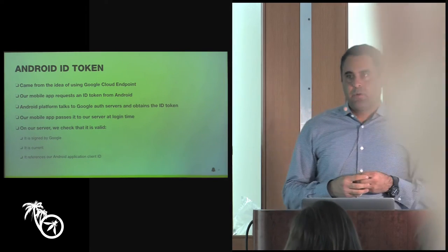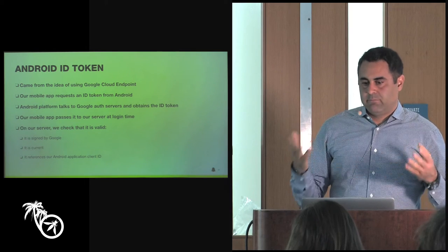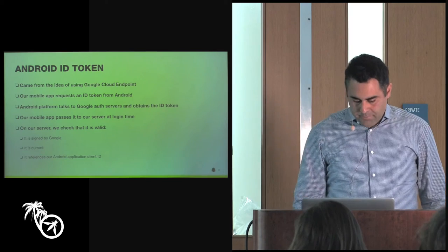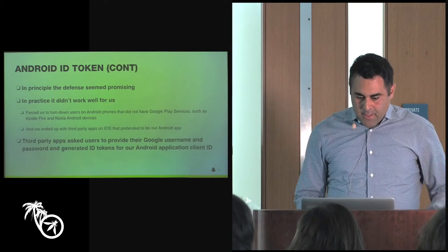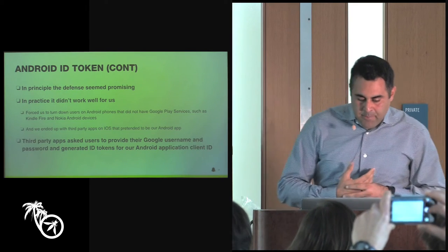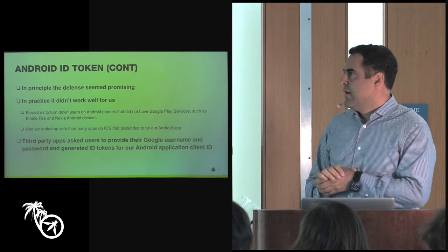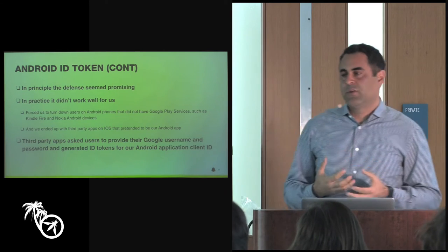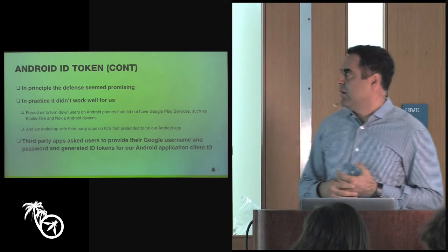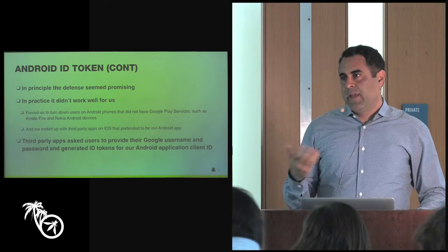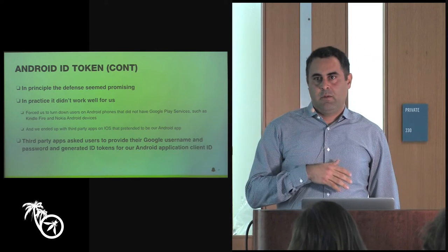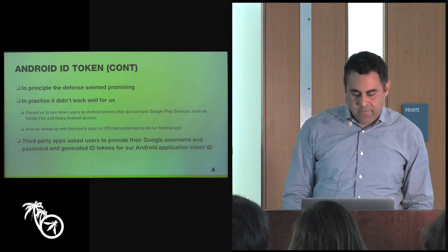The ID token is associated with Google accounts, so if you have multiple Google accounts on your phone, we could use the first one or try all of them to get legitimate tokens. In principle this seemed very interesting, but in practice it didn't quite work. The first problem was that you need Google Play Services installed — many Android phones don't have it, such as Amazon Kindle Fire or some Nokia devices. We had to decide whether to support those devices or go with this approach, and ultimately the need for curtailing abuse prevailed — we stopped accepting Android devices without Google Play.